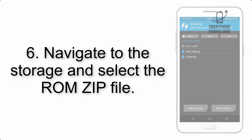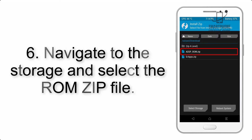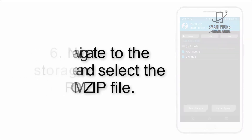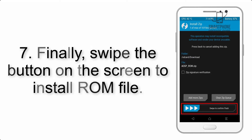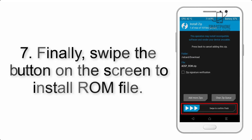Step 5: Go back to the recovery main screen and tap on the Install button. Step 6: Navigate to the storage and select the ROM zip file. Step 7: Finally, swipe the button on the screen to install the ROM file.